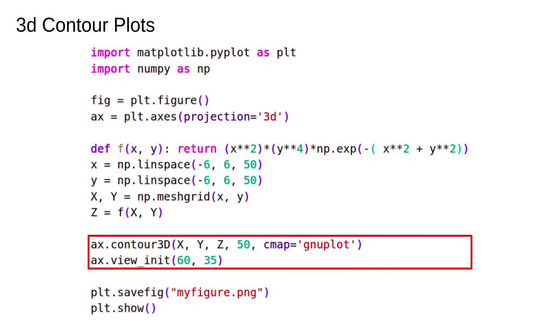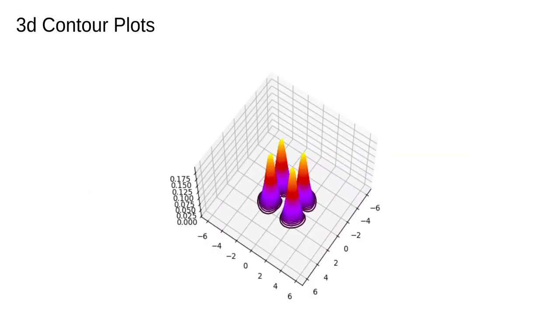In general for 3d plots I recommend just generating the plot in interactive mode, rotating it by hand to get the desired angle, and then saving the figure from the interactive window. The final figure looks like this.